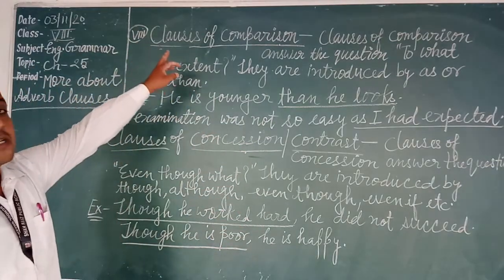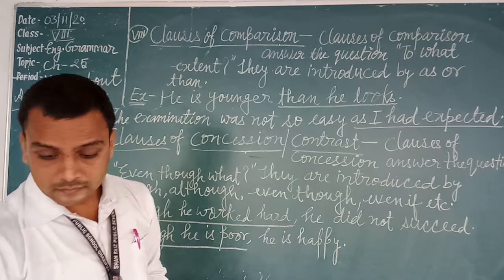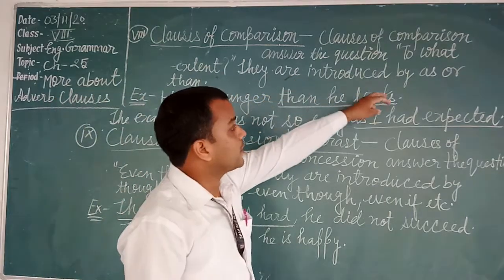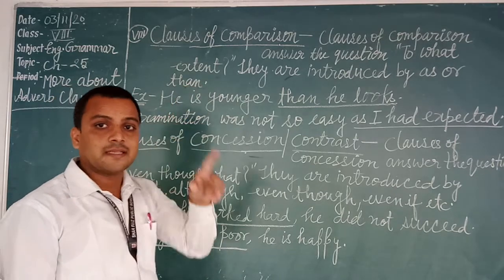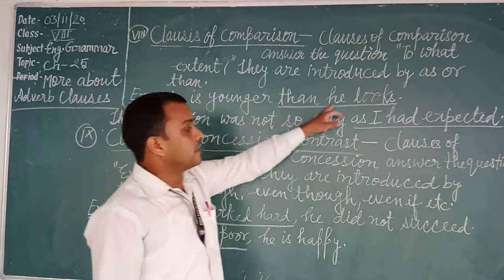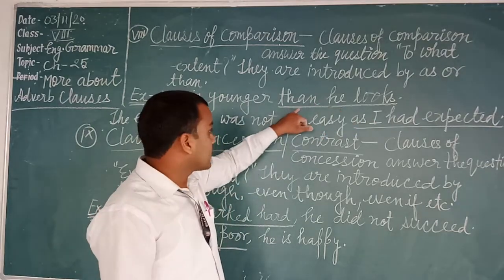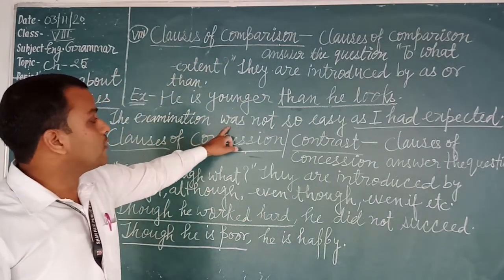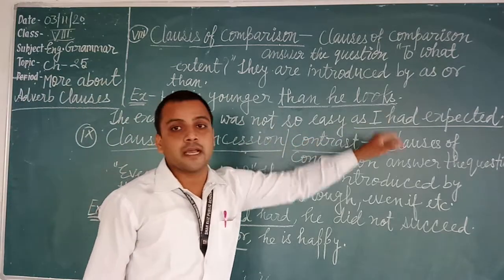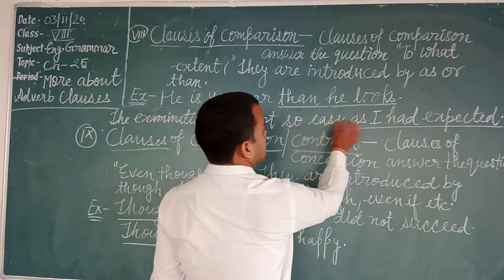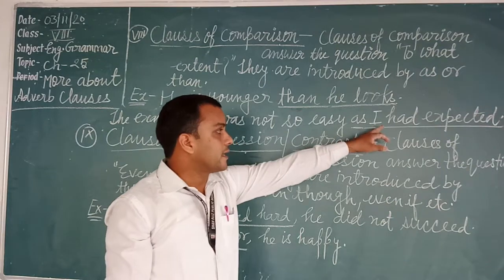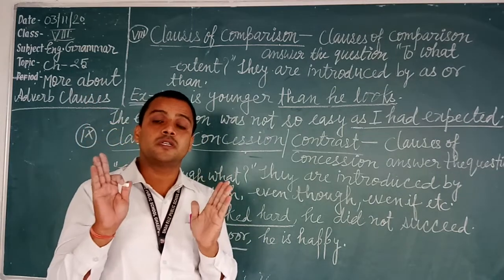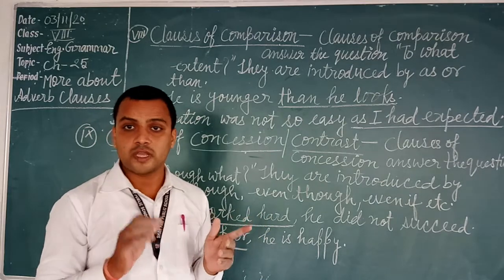The eighth kind is clauses of comparison. A clause of comparison answers the question 'to what extent.' They are introduced by 'as...as' or 'than.' For example: 'He is younger than he looks.' Another example: 'The examination was not so easy as I had expected.' These show clauses of comparison.